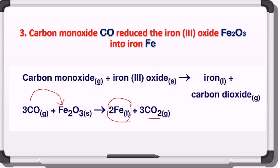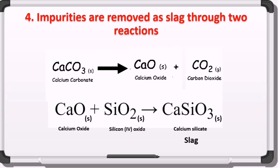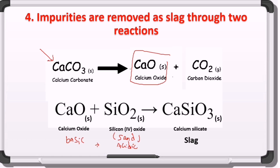The molten iron goes down quickly because it's more dense and is extracted from its exit. We still have impurities, so we use calcium carbonate. This is thermal decomposition due to the very high temperature in the furnace: calcium carbonate is thermally decomposed into calcium oxide plus carbon dioxide gas. Calcium oxide then reacts with silicon dioxide — the main impurity mixed with the hematite. CaO is a basic oxide since calcium is a metal, and silicon dioxide is an acidic oxide. Basic oxide plus acidic oxide produces a salt, and this reaction is classified as a neutralization reaction.